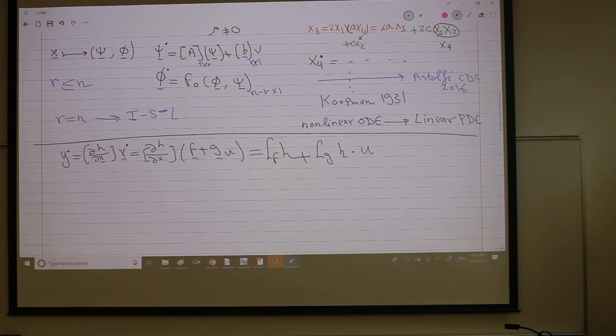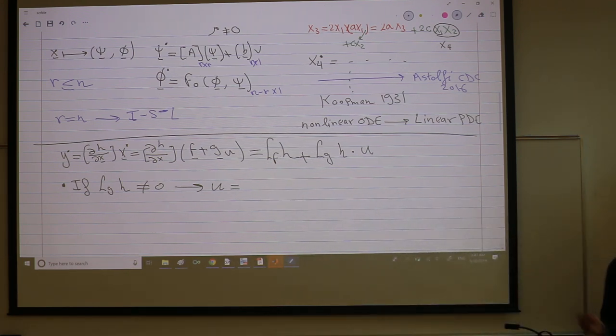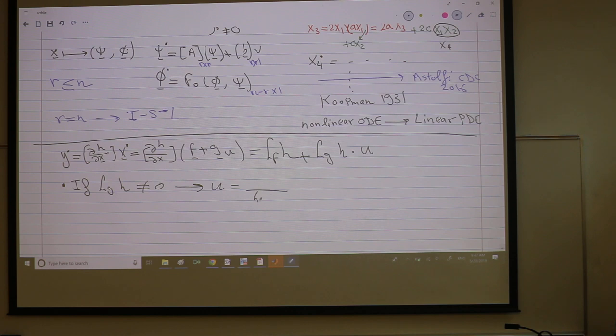So if this guy, the coefficient of u, L_g h, is non-zero, then I can define my u to cancel the non-linear dynamics. The coefficient of non-linear term is here. So because I can divide by this guy, L_g h, it's non-zero, so it's negative L_f h plus v divided by L_g h. So this will result in y dot equals v. Here is a linear relation between the input and output.